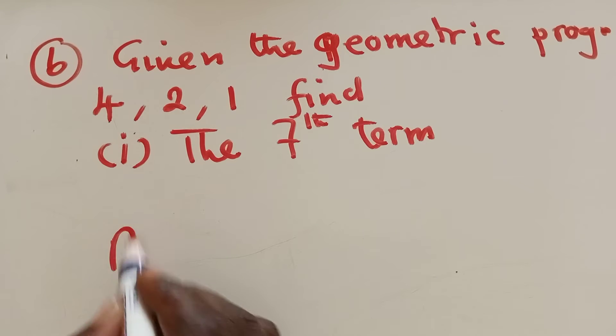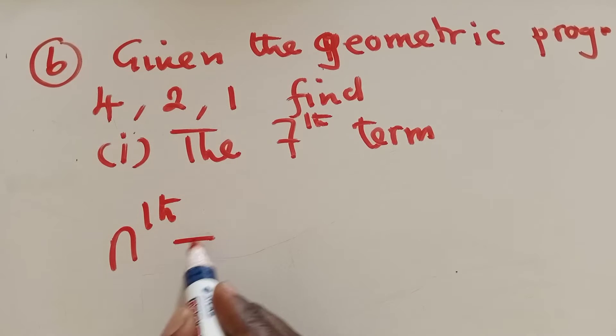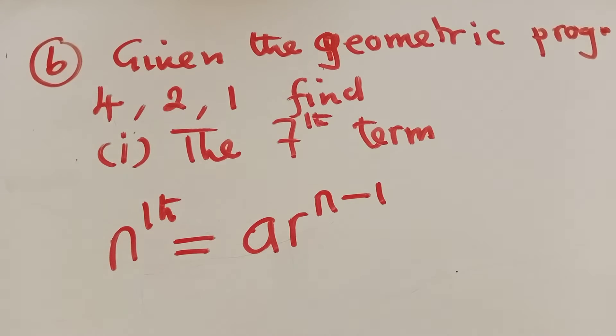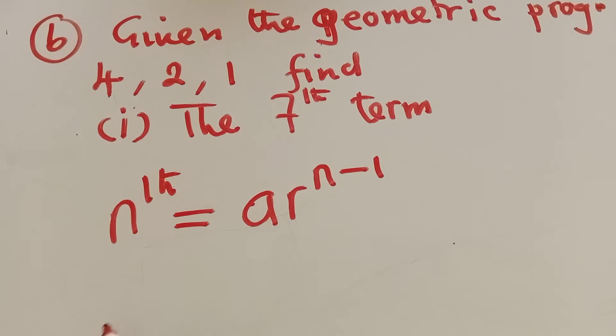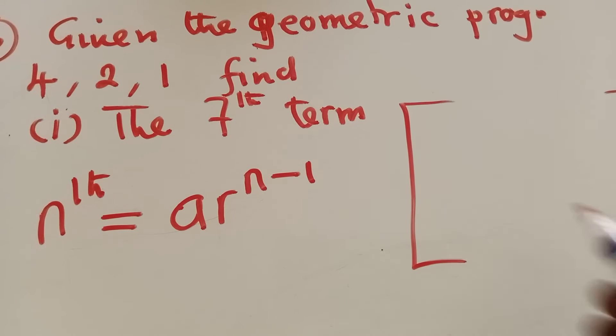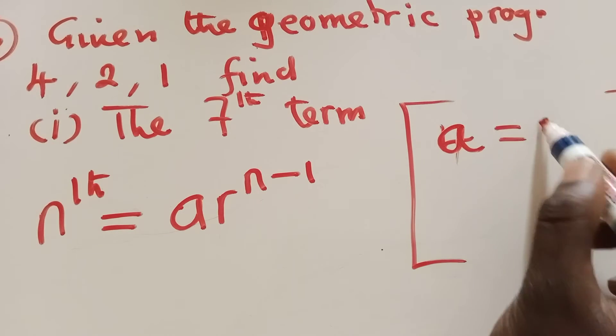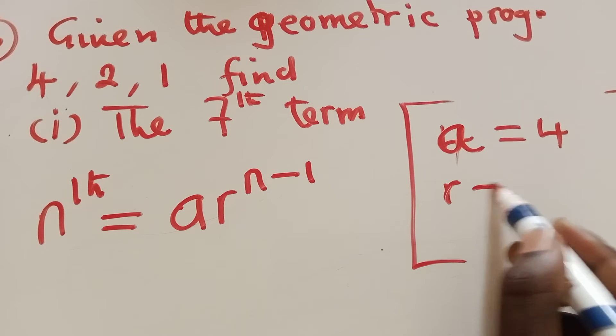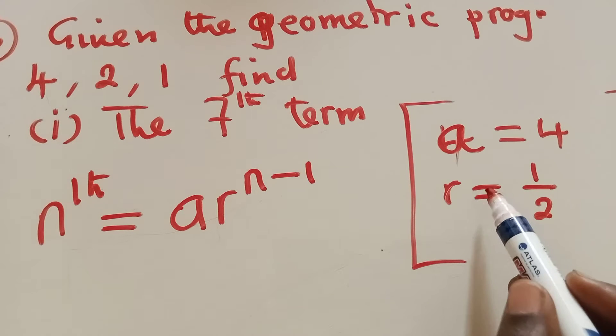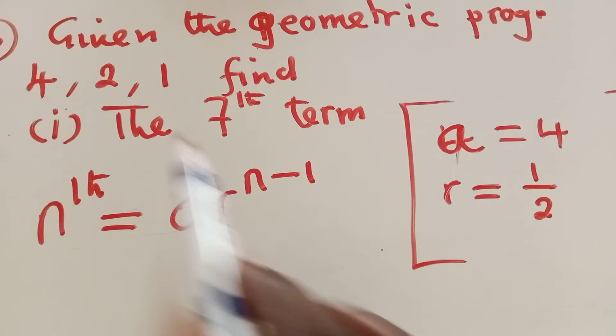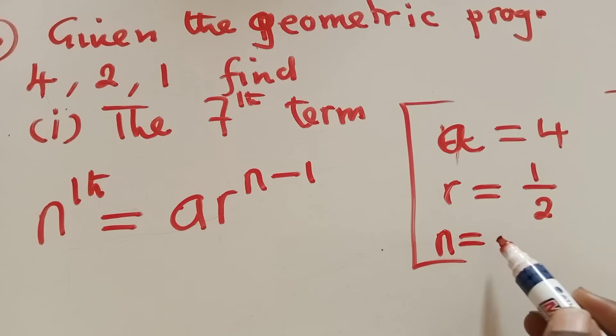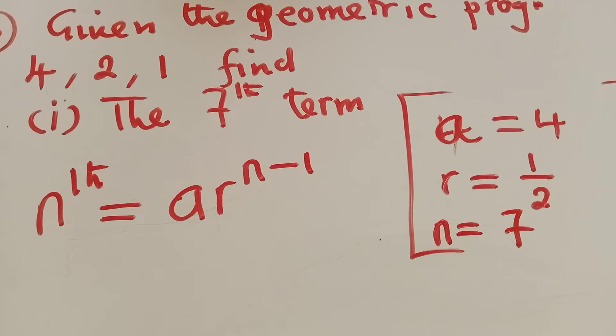In order for us to find the 7th term, we need to know the formula for finding the nth term of geometric progression. This is the formula: nth term equals a times r to the power n minus 1. This is the formula we have to know. So what is our a? Let me put our data here. Our a in this case is 4. And our r will be equal to 1 over 2. I will explain how to find the things I'm putting here. So our a is 4, r is 1 over 2, and the n is what we've been asked to find, which is 7.